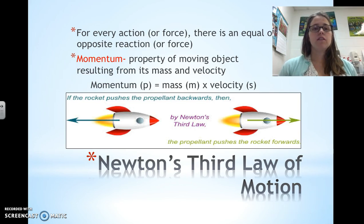Newton's third law of motion. For every action or force, there is an equal or opposite reaction or force. Momentum is one of those things. It's a property of a moving object that results from its mass and velocity. So, momentum has a unit P, and mass has a unit M, and velocity S. So, P equals mass times speed, or velocity.